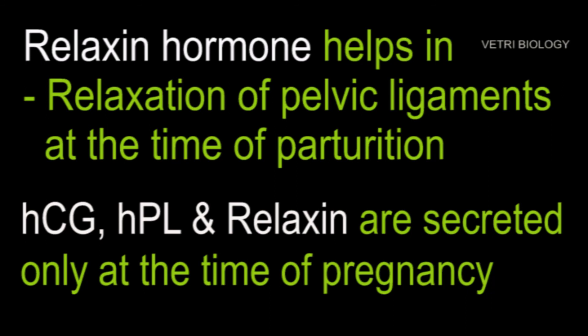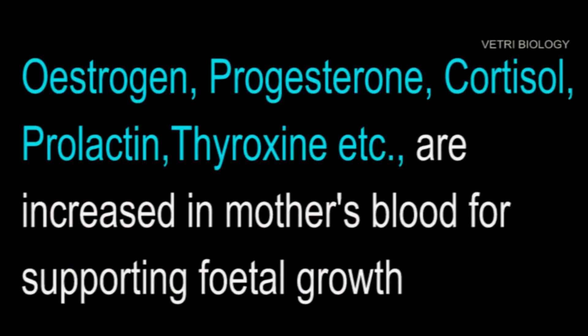Human chorionic gonadotropin, human placental lactogen, and relaxin are produced only during pregnancy. Other hormones involved include estrogen, progesterone, cortisone, prolactin, and thyroxin.